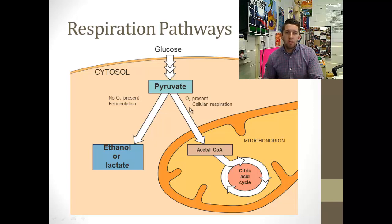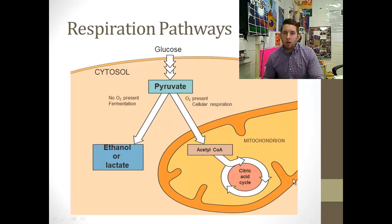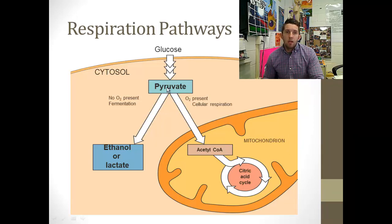We are lucky enough to be aerobic organisms, so we can convert pyruvate to acetyl-CoA, which enters the Krebs cycle to make even more ATP. Then the electron transport chain occurs in the matrix and makes even more ATP. However, some anaerobic bacteria cannot even survive in aerobic conditions — this is the end of the line for them. They're only able to convert pyruvate into ethanol or lactic acid, and they miss out on the Krebs cycle and electron transport chain, making only the two ATP from glycolysis.